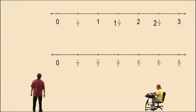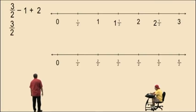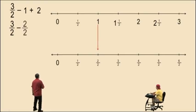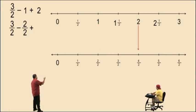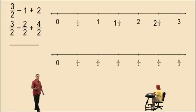Charlie, now pay attention. Here we have 3 halves subtract 1 plus 2. Now we throw in some whole numbers. So we have 3 halves subtract — look at the number lines, Charlie. 1 is equivalent to 2 halves, right? We just saw that. So let's rewrite the 1 in our calculation as 2 halves. Now those two fractions have the same denominator. Let's go over to the 2. Now 2 is equivalent to the fraction 4 halves because 4 divided by 2 is 2. So let's rewrite the 2 as 4 halves. Now notice, all of our denominators are the same.